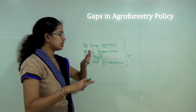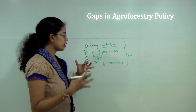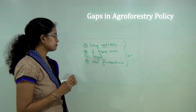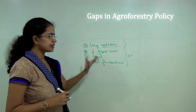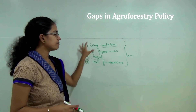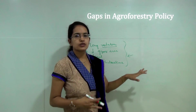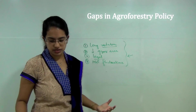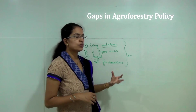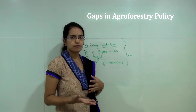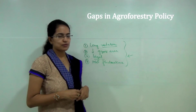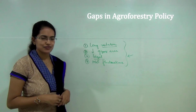This was a brief overview of the National Agroforestry Policy 2014 — its major benefits, drawbacks, gaps, and the reasons why farmers are resistant to adopting agroforestry policy changes. In the next session, we will cover more topics related to recent happenings in the environment. You can subscribe to our channel for more updates. Have a good day.